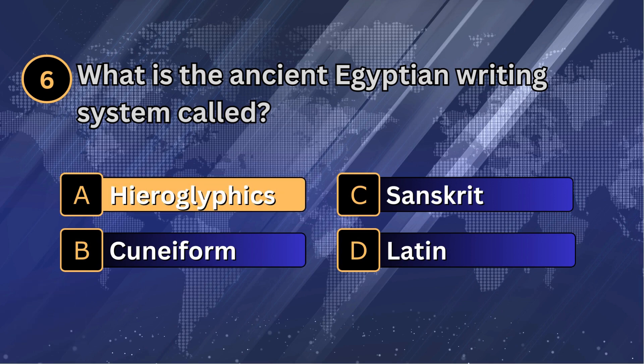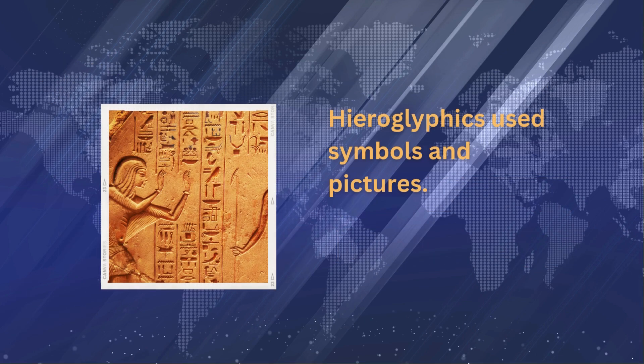What is the ancient Egyptian writing system called? Hieroglyphics. Hieroglyphics used symbols and pictures.